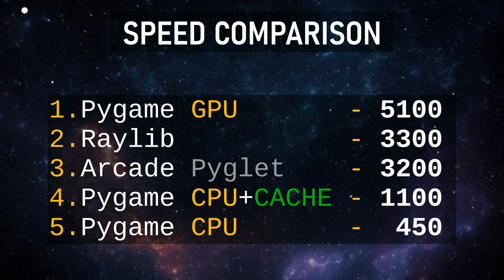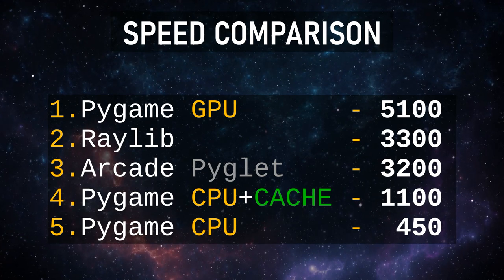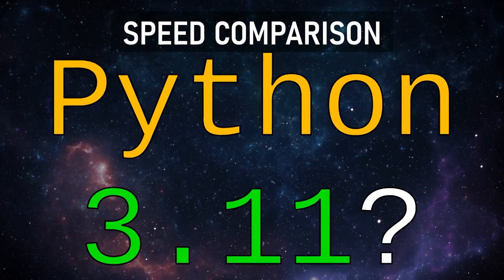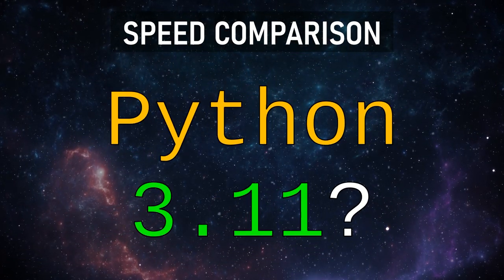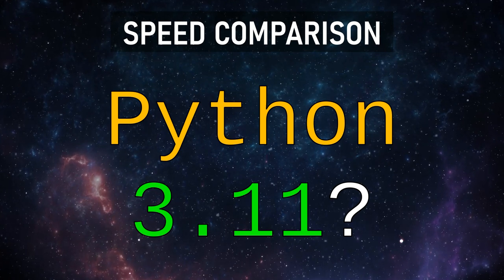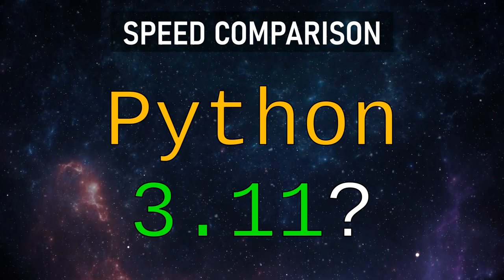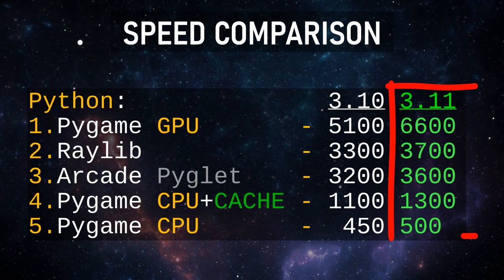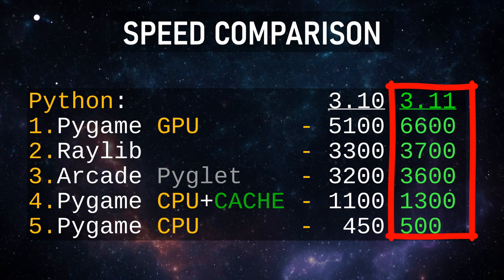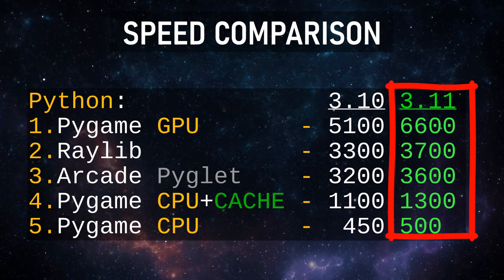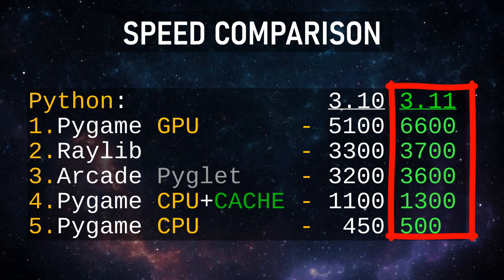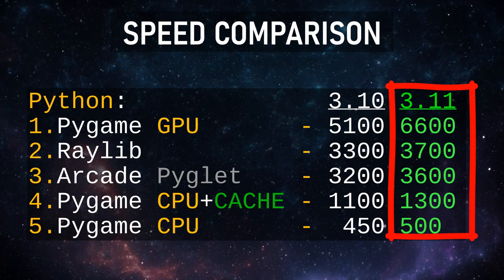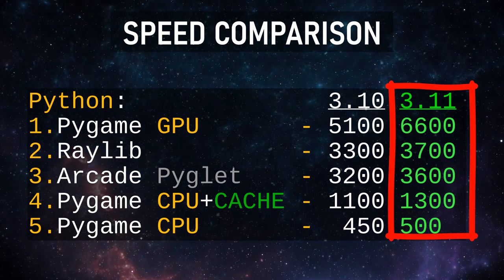The final results table shows PyGame GPU as a pleasant surprise — more than 11 times faster than the CPU version. We also test Python 3.11, which has implemented some just-in-time compilation for improved performance. The results, shown in the right column, indicate a performance increase of 10 to 30 percent across libraries, with the strongest increase again in the PyGame GPU case. These are significant reasons to switch to Python 3.11.